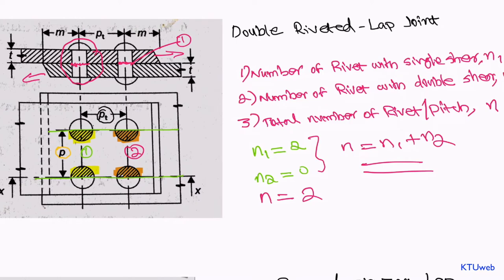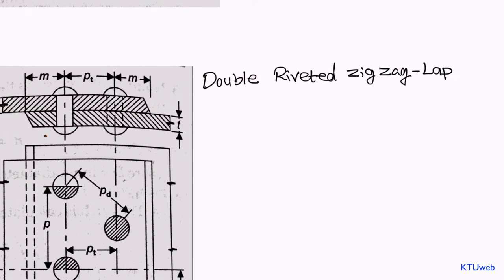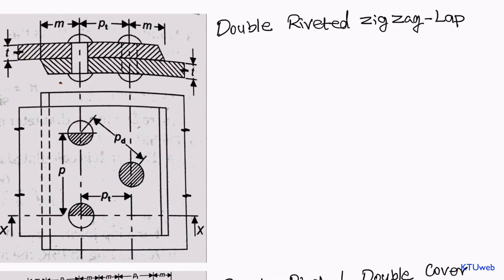Now let us discuss a different kind of riveted joint: the double riveted zigzag lap joint. It is called double riveted because you can find two rows of rivets within the main plate. It is called zigzag due to the staggered arrangement of the rivets. In case of a staggered arrangement, there is another kind of pitch called the diagonal pitch, but that is outside our interest when calculating the rivet count per pitch.